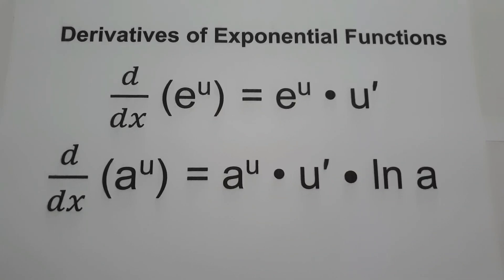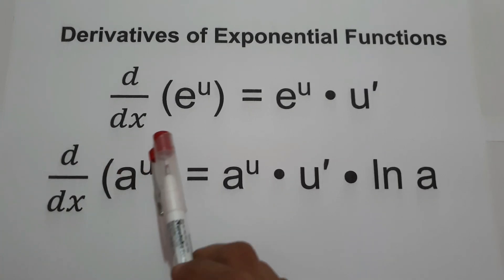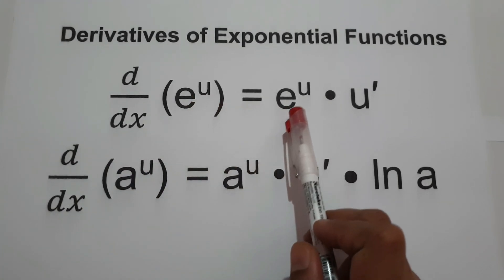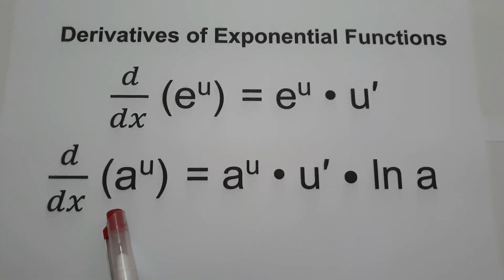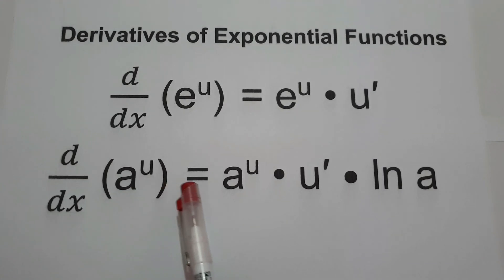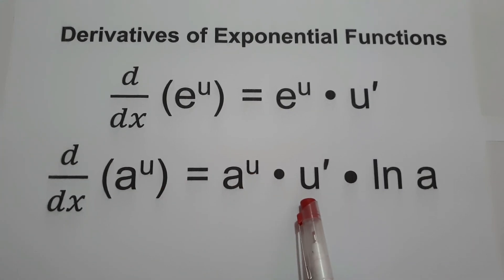Welcome to another video. For today's video, we are going to talk about how to find the derivatives of exponential functions. To find the derivative of an exponential function, we have two different formulas that you need to remember. The first one is the derivative of e raised to u, that is e raised to u multiplied by u prime. The second one is the derivative of a raised to u, which is equal to a raised to u multiplied by u prime times ln a.